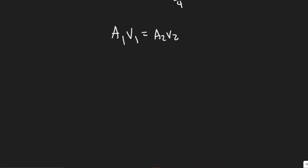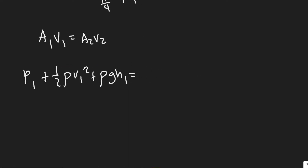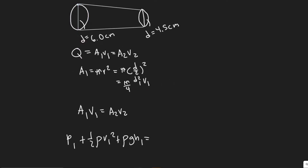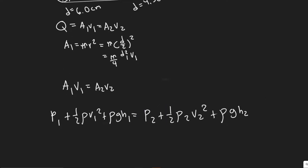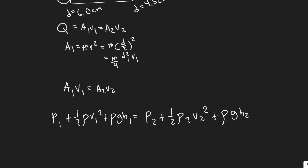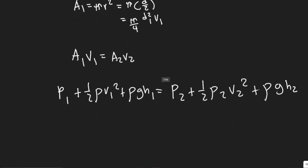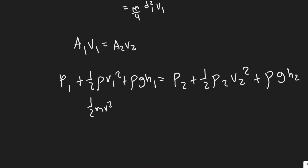Bernoulli's equation tells us: P1 plus one-half rho V1 squared plus rho g H1 equals P2 plus one-half rho V2 squared plus rho g H2. This works like conservation of energy for a pipe — the one-half rho V squared term is like kinetic energy, and rho g H is like potential energy, just replacing mass with density.